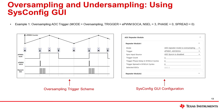Here is an example demonstrating ADC oversampling using EPWMSOCA as the trigger source and N equal to 3, for an oversampling factor of 4. On the left, you can see the oversampling trigger scheme, and on the right, you can see the ADC Repeater Module configuration in SysConfig. Notice that the last row is pre-populated, and SysConfig shows all the SOCs that use Repeater 1 as their trigger source.